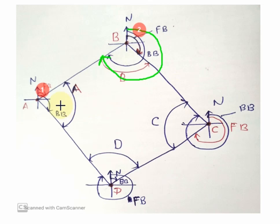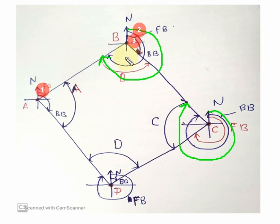The fore bearing of BC is measured from station B towards the BC line. The back bearing of BC is measured from station C towards the BC line, from north to the survey line. Then the fore bearing of CD is measured from C towards the CD line.